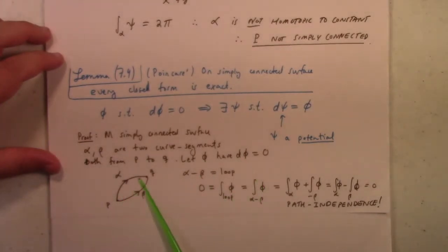If you look at this, alpha and beta, they form a loop. So alpha minus beta, because you have to go the opposite direction, alpha minus beta is a loop. But we know that because we have a simply connected surface, the integral around the loop is zero, and that was lemma 7.8, which was back on page 5 in my notes.